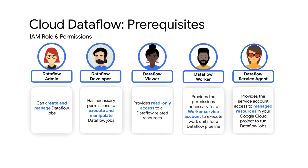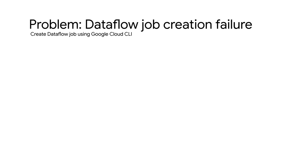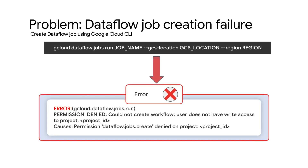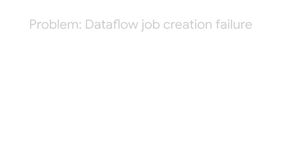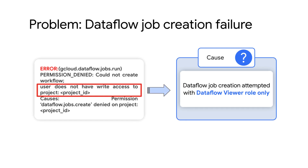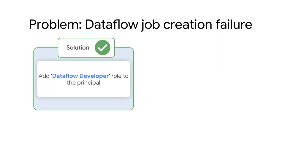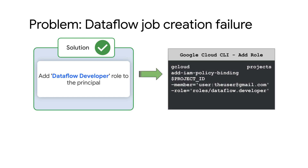I will show you how to troubleshoot and resolve some common scenarios where Dataflow jobs fail with permission errors. Let's start with the first scenario: Dataflow job creation using Google Cloud CLI fails with an error. When you attempt to create the Dataflow job using Cloud Console, you will observe that the Create Job From Template button is disabled. This typically occurs when the user or group is attempting to create the Dataflow job with only the Viewer role or permissions. To resolve this issue, add the Dataflow developer role to the principal using the Google Cloud CLI command shown here.